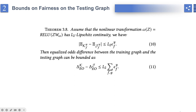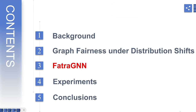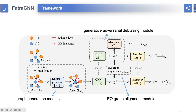To alleviate the unfairness issue on the testing graph, we not only have to minimize ΔEO, but also have to minimize the EO group representation distance. Motivated by these findings, we present our framework FATRA GNN, which mainly includes three parts: A, the generative adversarial debiasing module to get smaller ΔEO on the training graph; B, the graph generation module to generate graphs with large bias and under different distributions; C, the EO group alignment module to minimize the EO group representation distance.